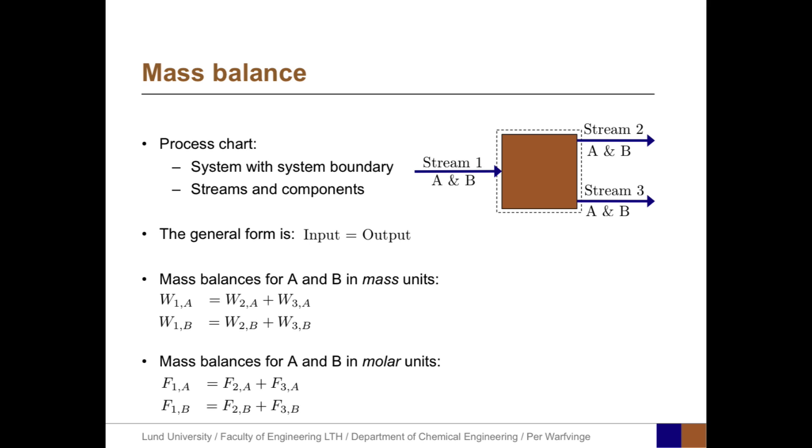The mass balances for A and B in molar units are, for A, F1A equals F2A plus F3A, with the corresponding equation for the component B. Here we see that we have two components, and we can set up two mass balances.